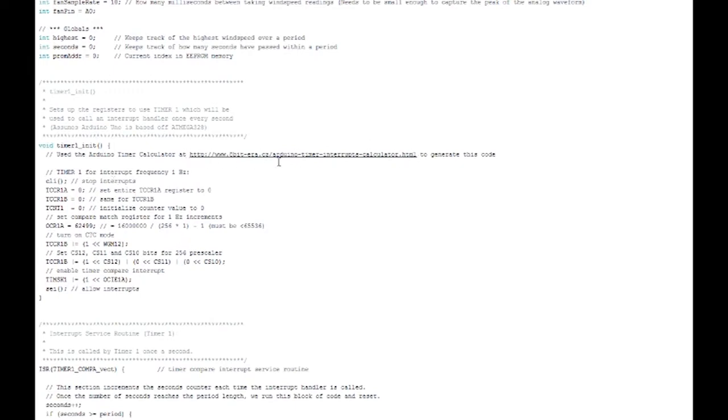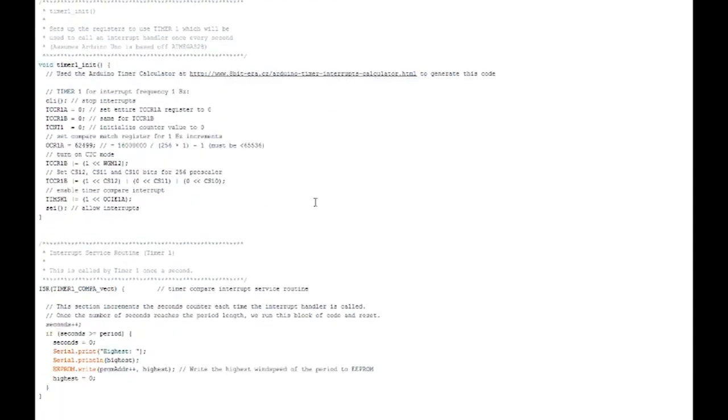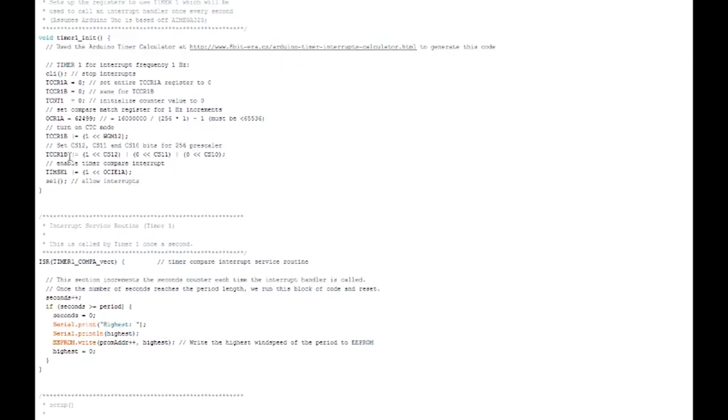So our first function here is the timer1 initializing function. I got this, I used this website right here, this calculator, and it sets all these registers. Don't let this scare you because most of the stuff we do in Arduino doesn't look like this. If you want a really in-depth view on how to set up registers and stuff like this, a great book is called Make AVR and explains all this. It really goes into the bare bones AVR programming. The AVR or the ATmega is the chip that sits on top of the Arduino. So that's what this is. This is kind of like raw programming for that chip. So this initializes the timer. Don't get too caught up on that.